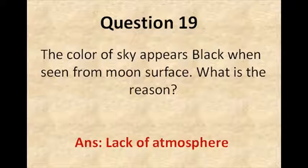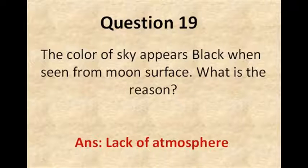The next question is: the color of the sky appears black when seen from the moon's surface — what is the reason? The answer is the lack of atmosphere on the moon.